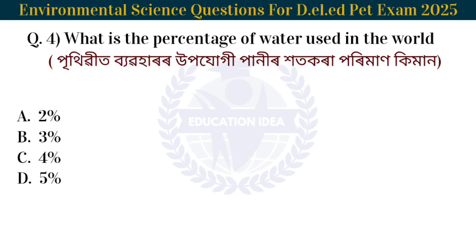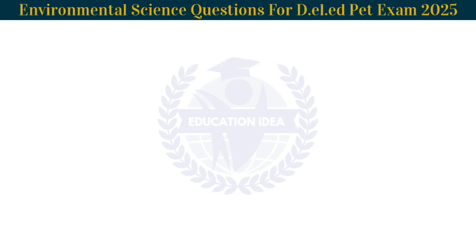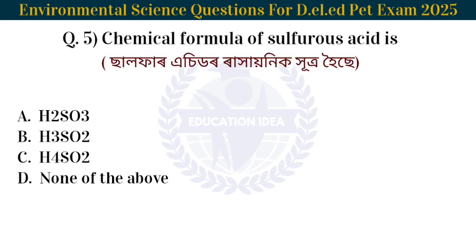Next question: What is the percentage of water used in the world? Pithibit bebohar upozugi pani hot kora poryman ki maan? The answer is 3%. The percentage of usable water in the world is 3%.